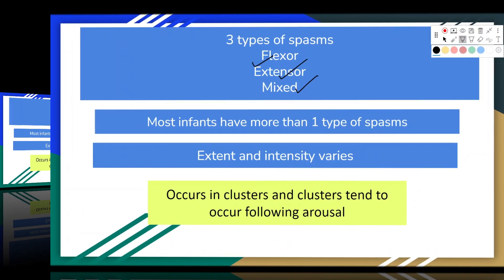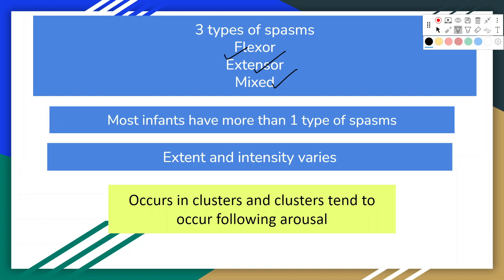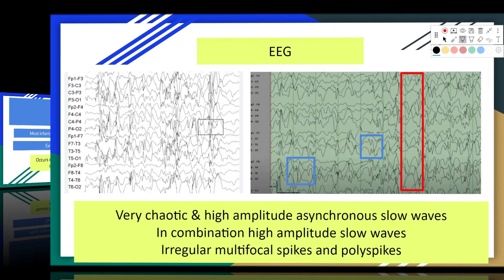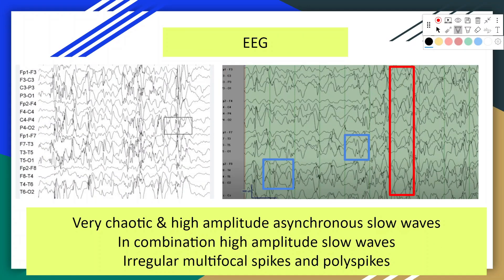The third type, mixed flexor and extensor spasms, usually consists of flexion of the neck, trunk, and arms with extension of the legs. The extent and intensity of seizures vary. Eighty percent of spasms occur in clusters consisting of 2 to 125 events at a rate of as many as 13 events per minute. Clusters tend to occur following arousal rather than during sleep.